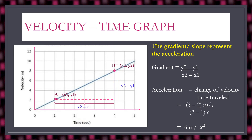In a velocity-time graph, the y-axis shows velocity in meters per second and the x-axis shows time in seconds. The gradient of the velocity-time graph gives the acceleration, which is the change of velocity (y-axis) over time travelled (x-axis).